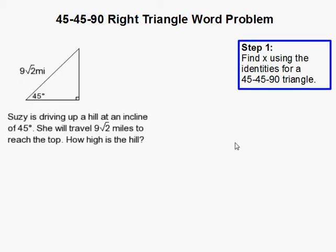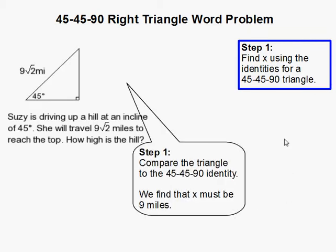45-45-90 right triangle word problem. Okay, so the first thing we need to do is to compare the triangle that's given in the problem to our identity. Let's read the problem first.